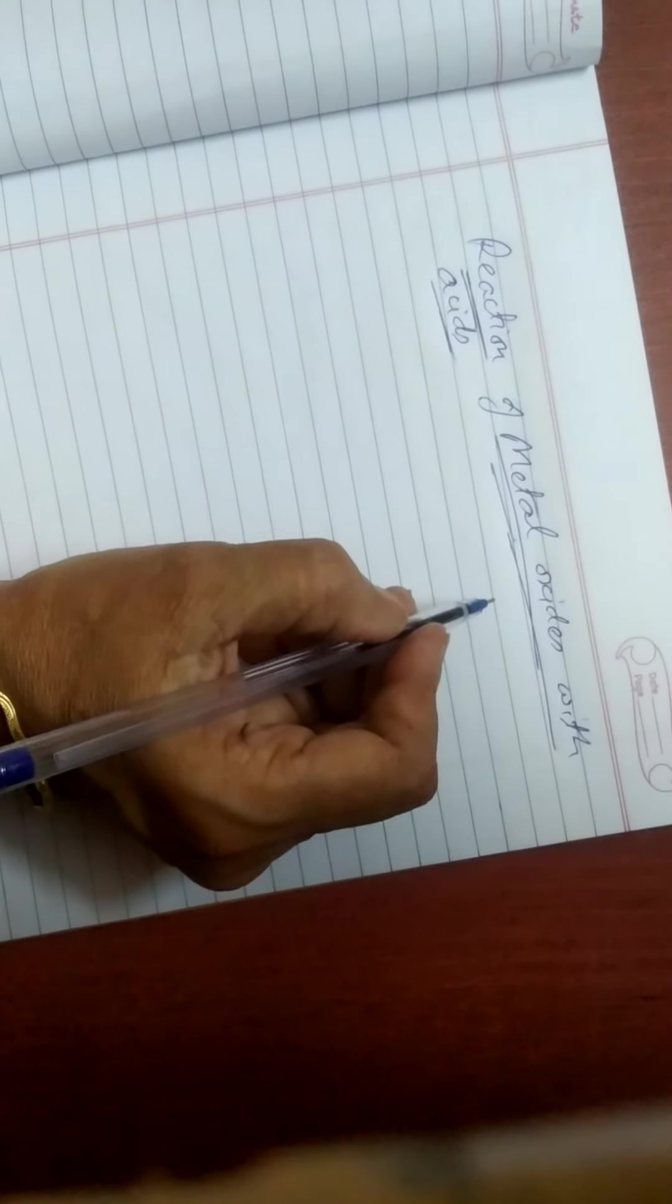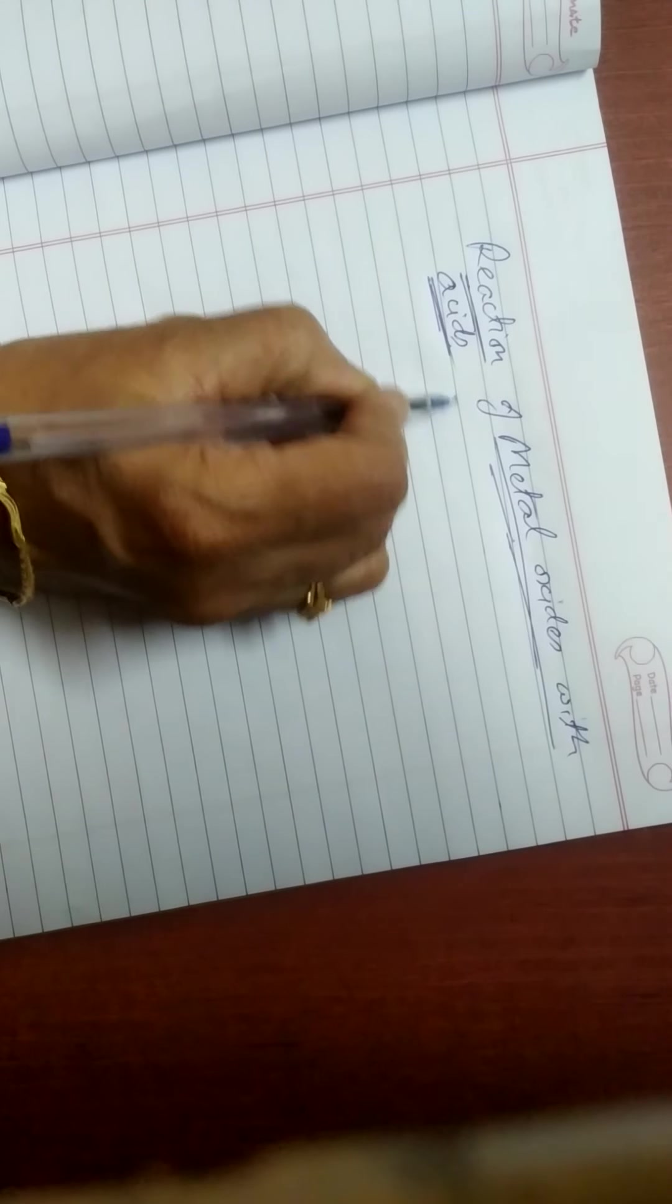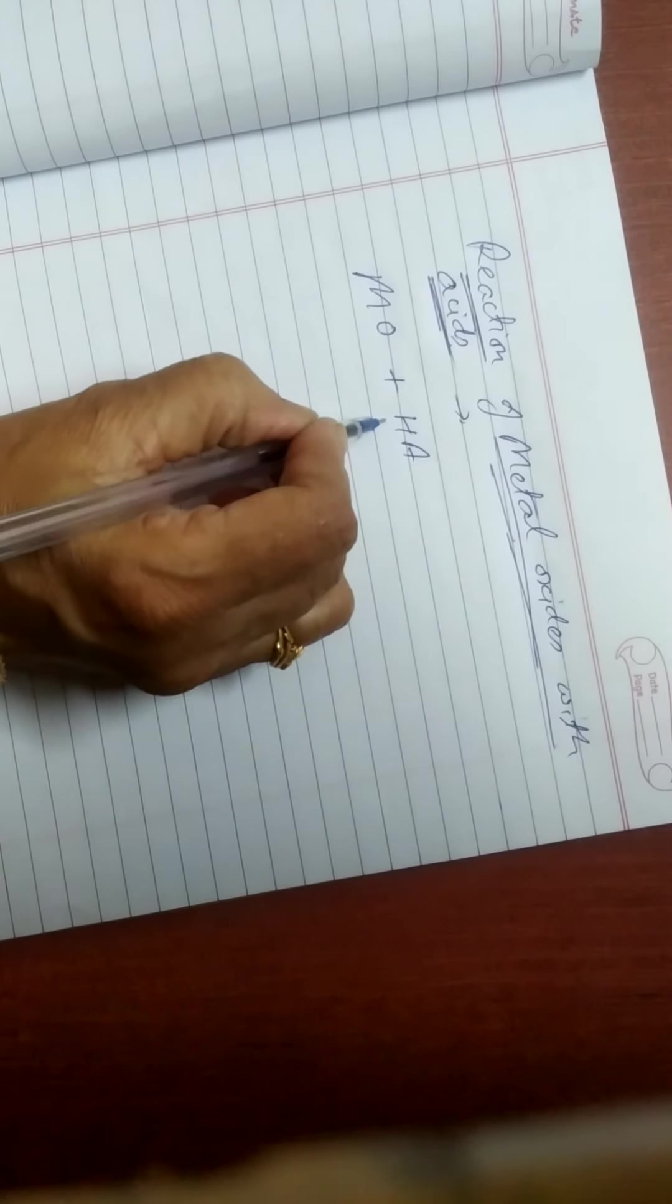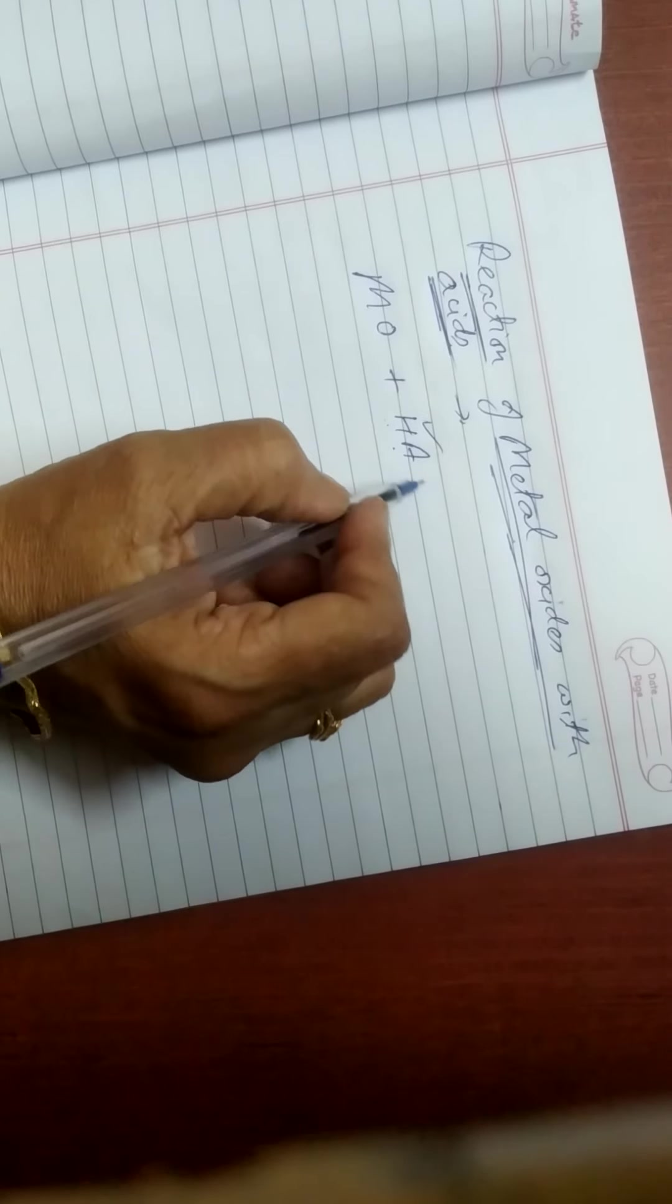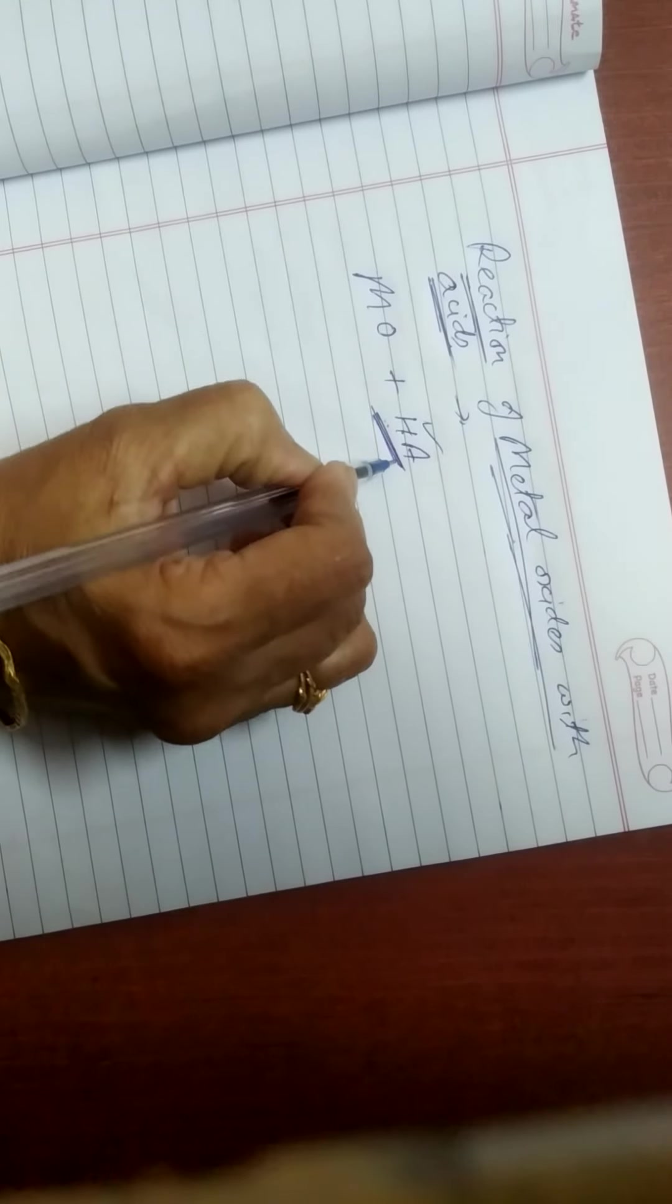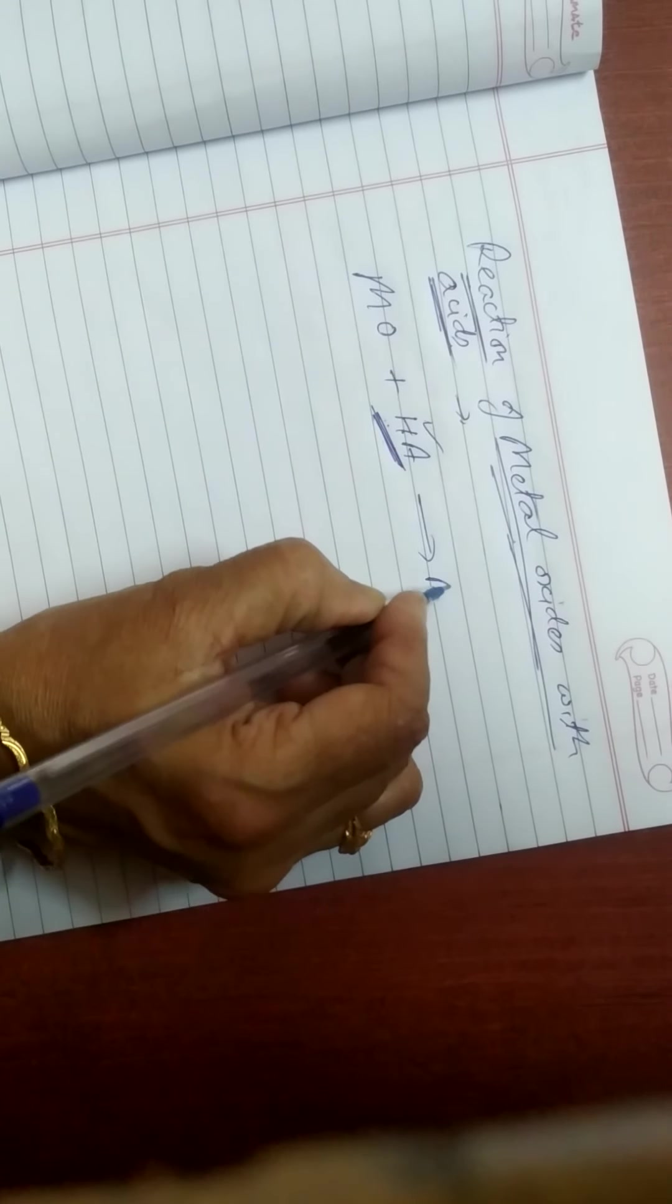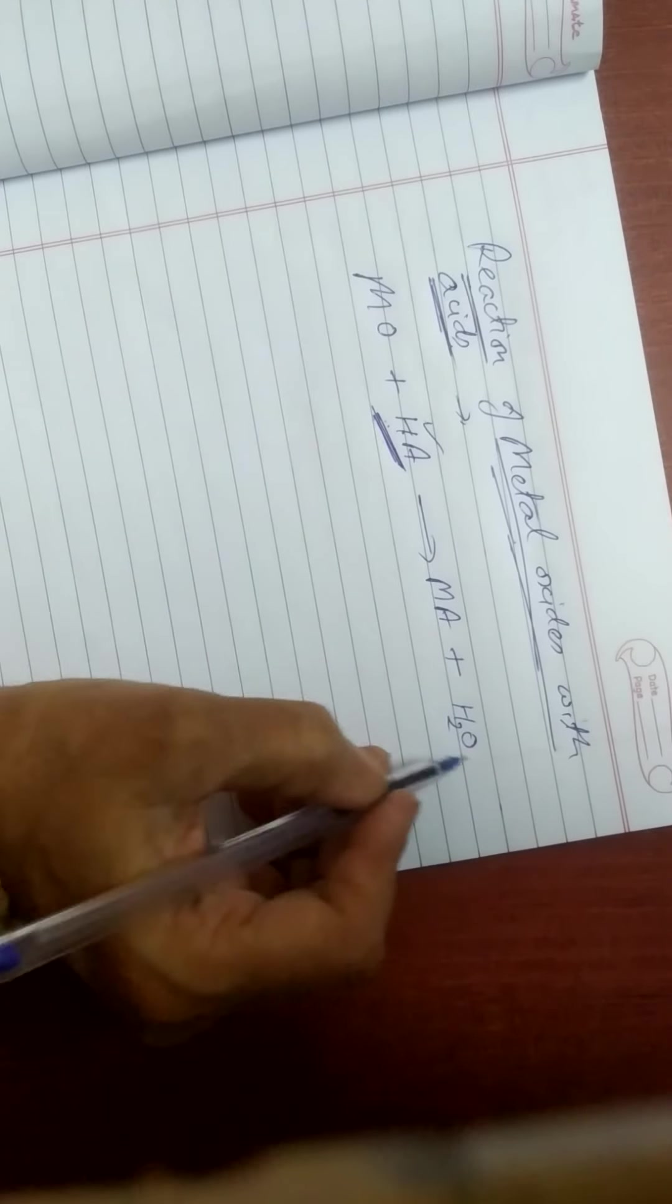This part of the video is deleted, so I am explaining in the notebook. When metal oxide reacts with acid, the acid is represented as HA because acids are substances which release H+ ions. The reaction of acid plus metal oxide forms MA plus H2O. This is the skeletal equation.